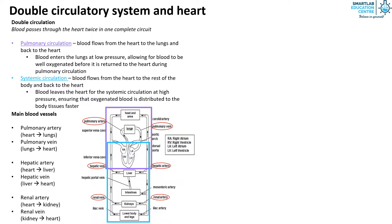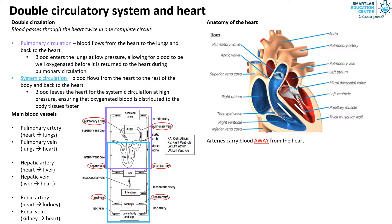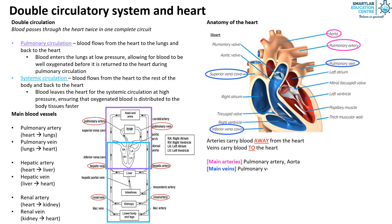Now let's look at the anatomy of the heart. This diagram shows the arteries, veins, atrium, and valves that can be found in the heart. Do note that the arteries carry blood away from the heart, and the veins carry blood to the heart. The main arteries of the heart are the pulmonary artery and the aorta. The main veins of the heart are the pulmonary vein, the superior vena cava, and inferior vena cava.